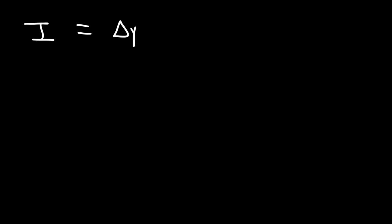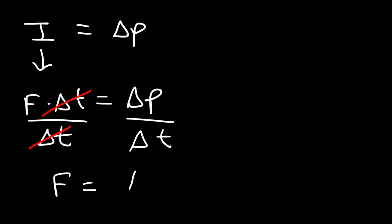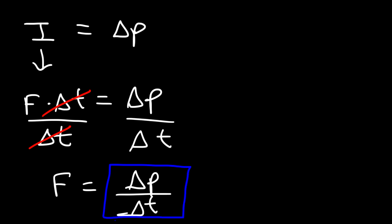There is an important point regarding impulse and momentum. Impulse equals force multiplied by the change in time — the time that the force has been acting on the object. If we divide both sides by delta t, we get the true definition of a force. A force is the rate at which the momentum of the object changes — it's delta p over delta t. So if you know how fast the momentum is changing, you know the net force acting on that object.